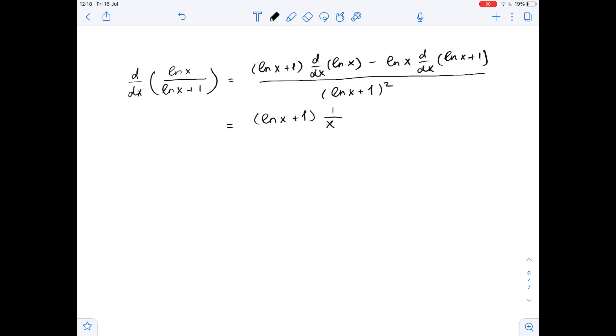So, times 1 over x minus ln of x times the derivative of ln of x plus 1, which is 1 over x as well because the derivative of ln of x plus 1 equals the derivative of ln of x, which is 1 over x, plus the derivative of 1, which is 0. So, it's just 1 over x.